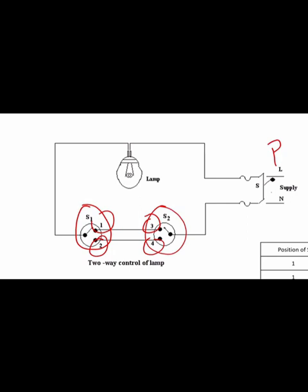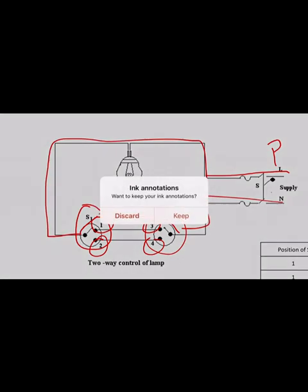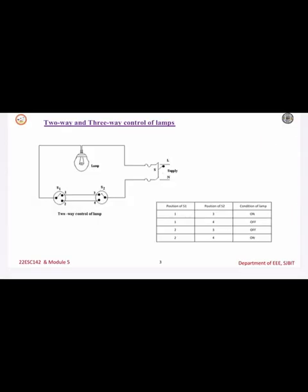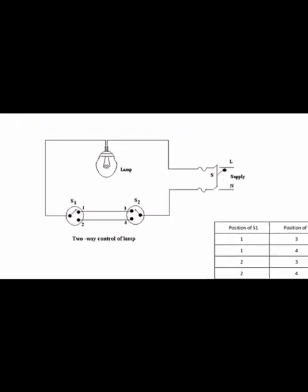When switch S1 is at position one and switch S2 is at position three, the current will flow through the lamp, go to switch one, which is connected to terminal one. From one to three we have a connection, and three is connected to switch S2, which then goes to neutral. So we have a closed path and the lamp will glow.